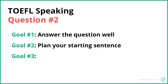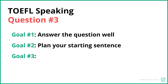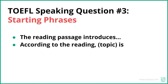For question two, answer the question well and plan your starting sentence. Here are two examples: 'The reading passage proposes a change to campus policy,' or 'It looks like there's a change to the university campus.' Those are two examples you can use pretty much every time for question two. For question three, answer the question well and have a starting sentence. Examples: 'The reading passage introduces,' 'According to the reading, bird migration is,' or 'According to the reading, camouflage is' — you put the topic there. You can use these phrases for pretty much any question three.